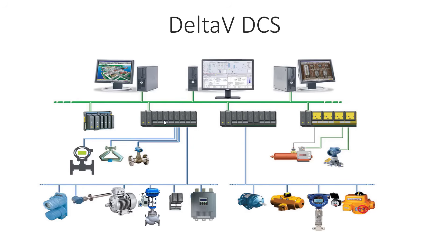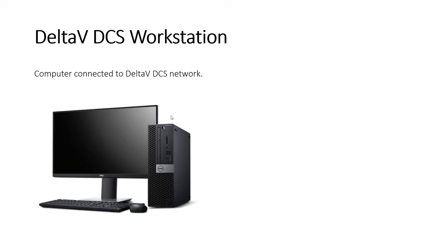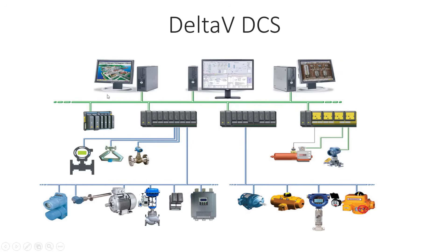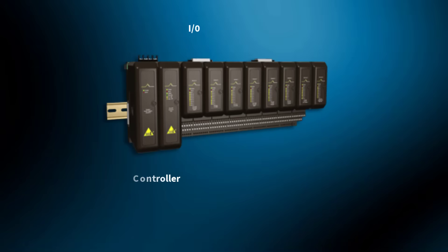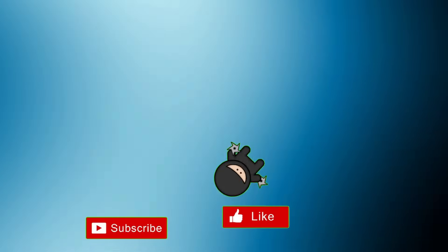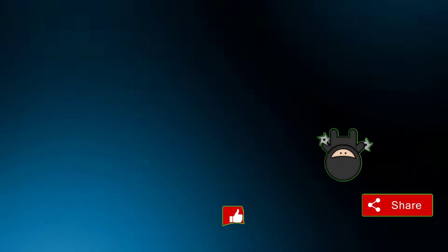So if you look at the architecture, each controller is a node and each workstation — operator screens, engineering workstation, servers — is also a node, because any PC connected to the control network is a DCS workstation. In summary: all the controllers and all the workstations on the control network are called nodes. This was the first video about Delta V DCS architecture; more complex architectures will be shared in coming videos. If you liked this video, hit the like button and consider subscribing.